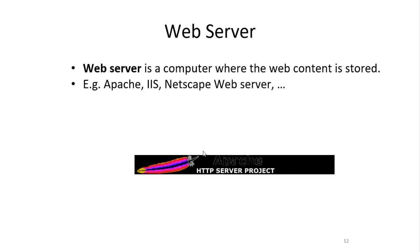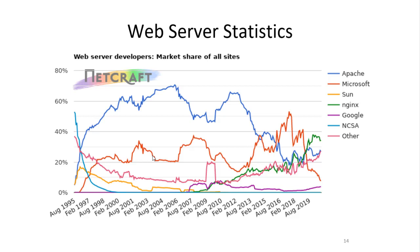A web server is a computer where web content is stored. Basically, a web server is used to host websites. It provides four major functions: serving web pages, running web programs and CGI, returning output, and controlling access, as well as monitoring and logging all accesses. According to statistics about web servers, the most widely used web server is Apache, and the second is Microsoft IIS.